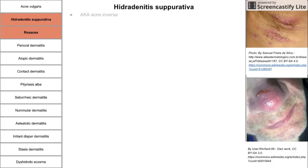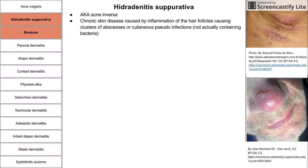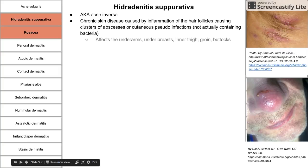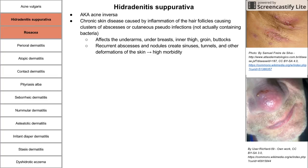Acne inversus — the other name is hidradenitis suppurativa, abbreviated HS. It's a chronic skin disease caused by inflammation of the hair follicles, creating clusters of abscesses or cutaneous pseudo-infections. These are called pseudo-infections because these pustules or abscesses don't always actually contain bacteria. HS usually affects the underarms, skin underneath the breasts, inner thighs, groin, and buttocks. Recurrent abscesses and nodules can create sinuses, tunnels, and other deformations of the skin, leading to high morbidity.